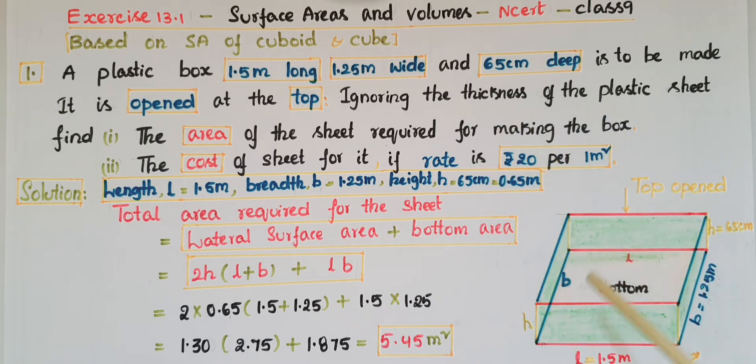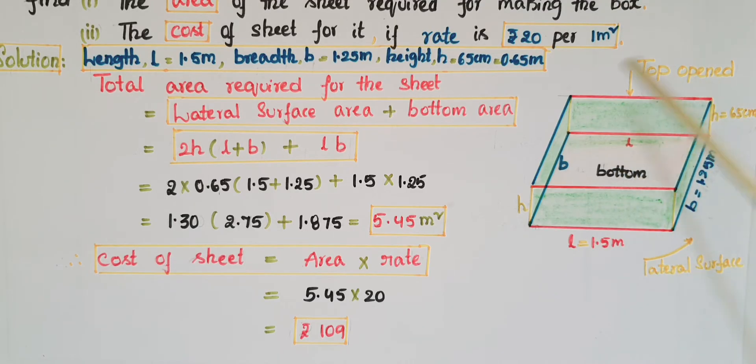Here, total area required for the sheet is equal to the lateral surface area (the four walls area) plus bottom area, because here the top area is excluded. We know that lateral surface area of a cuboid is equal to 2h(l + b) plus bottom area which equals lb.